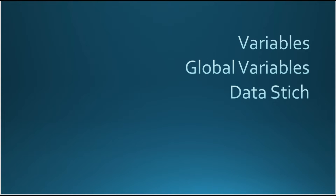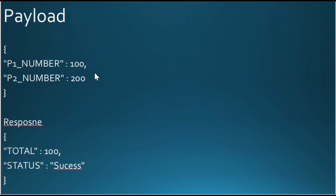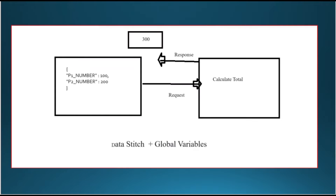Hi everyone. In today's session we are going to discuss about variables, global variables, and usage of data stitch action. Here you can see two payloads — your request payload contains two numbers and your response payload contains the total of two numbers and also the status of the integration. We are building this integration using global variables and data stitch action, but first you need to get some understanding on both.